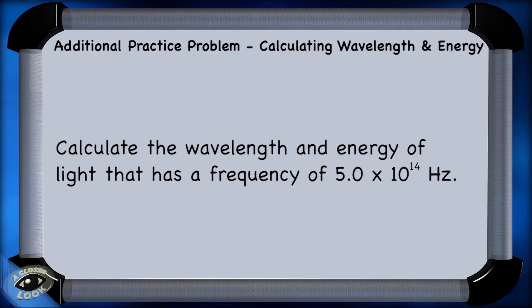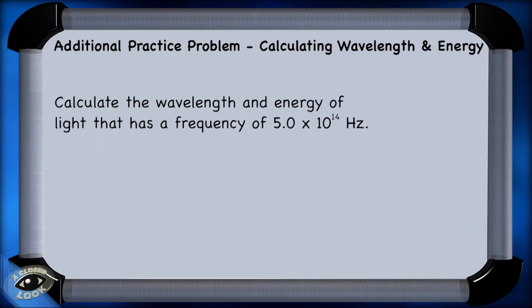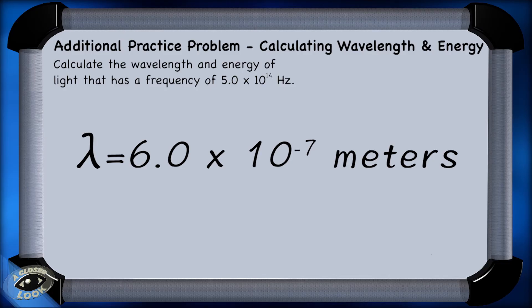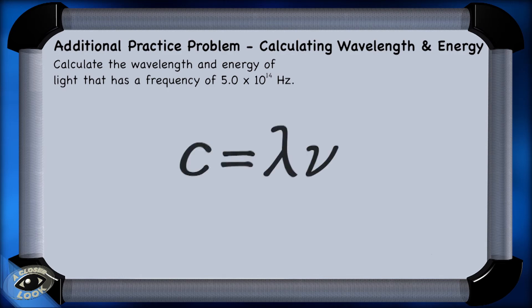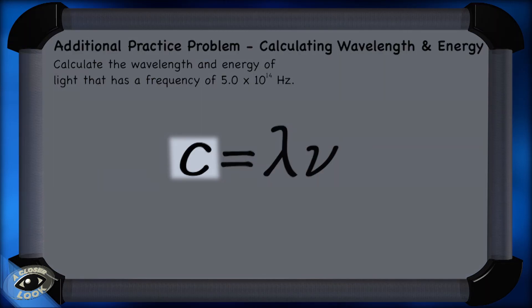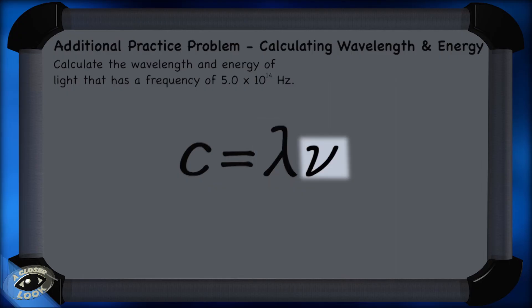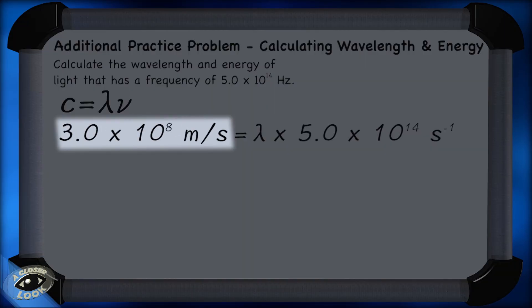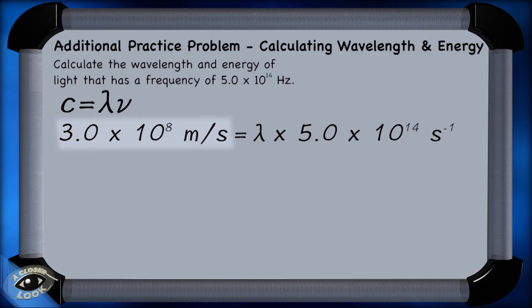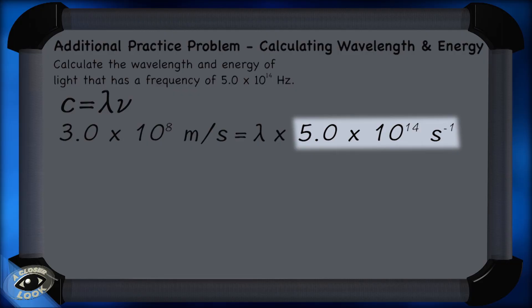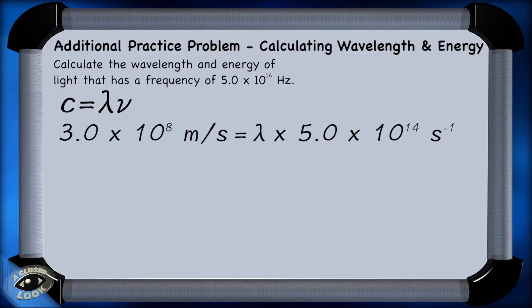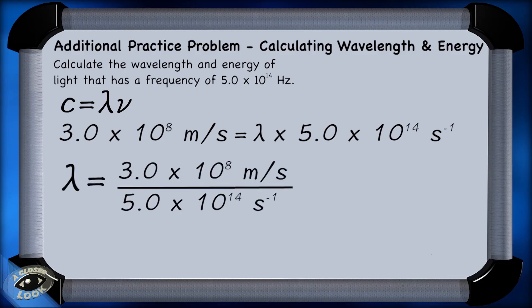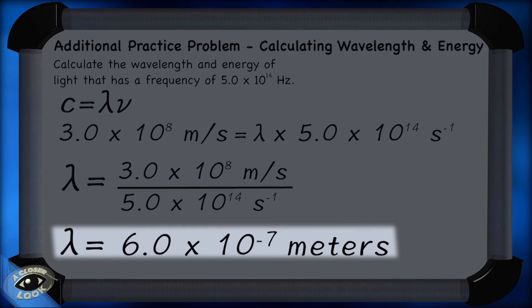For this question, we had to solve both the wavelength and the energy of light. If you answered that wavelength was 6.0 times 10 to the negative 7th meters, you got it right. We used the speed of light equation — c equals wavelength times frequency — where the speed of light is 3.0 times 10 to the 8th meters per second and frequency is 5.0 times 10 to the 14th hertz. Rearranging for wavelength by dividing both sides by frequency gives us 6.0 times 10 to the negative 7th meters.